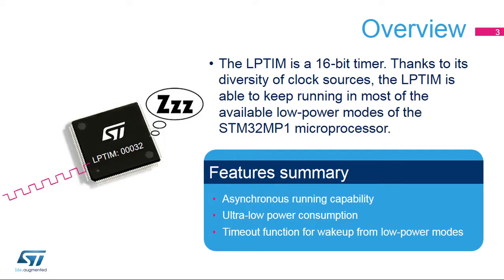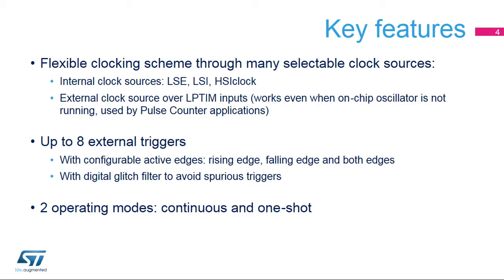The low-power timer peripheral embedded in the STM32MP1 microprocessor provides a 16-bit timer that is able to run even in low-power modes. This is made possible thanks to a flexible clocking scheme. The low-power timer peripheral provides basic general-purpose timer functions. One major function is its capability to keep running even when no internal clock source is active, when configured in asynchronous counting mode.